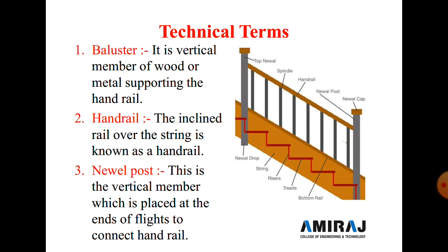Next is the handrail. The handrail is the rail over the string and is generally required to support the person during climbing the stairs. Next is the newel post. The newel post is the vertical member placed at the end of a flight to connect the handrail. The newel post is always provided at the starting and end of the flights.